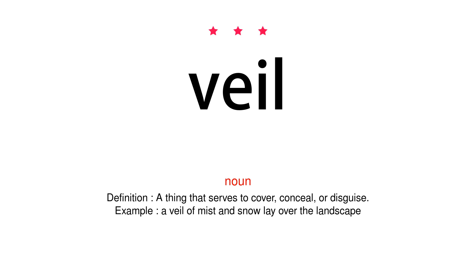Noun. Definition: A thing that serves to cover, conceal, or disguise. Example: A veil of mist and snow lay over the landscape.